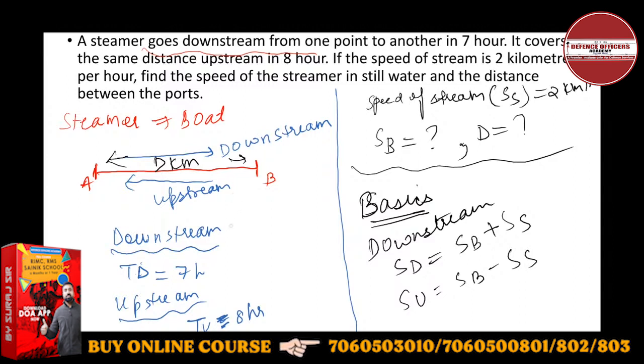So in the downstream case, distance is D. Speed is distance upon time. So SD will be distance D upon time, which is D by 7 kilometers per hour. What will be the upstream speed? Upstream speed will be D by 8.